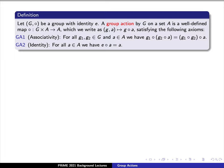For all elements g sub 1 and g sub 2 in our group capital G, and elements lowercase a in our set capital A, we have g sub 1 circle (g sub 2 circle a) is equal to (g sub 1 circle g sub 2) circle a. The first axiom here allows us to unambiguously define g sub 1 circle g sub 2 circle a.